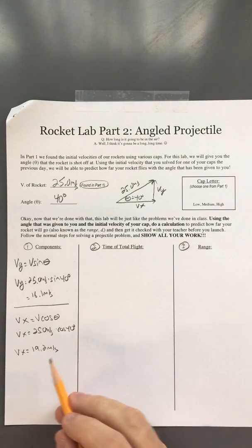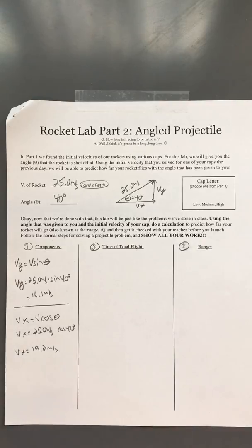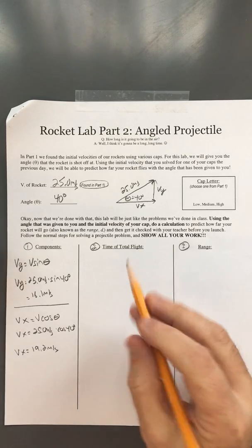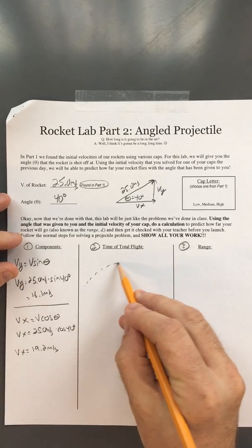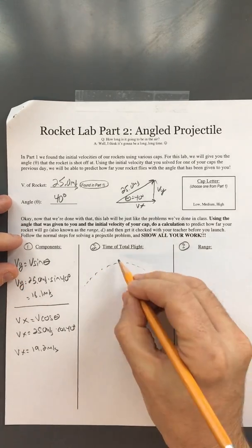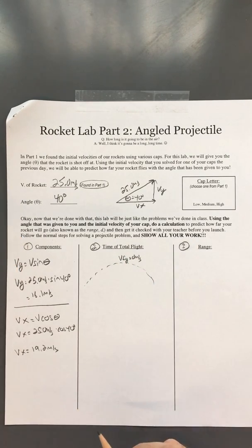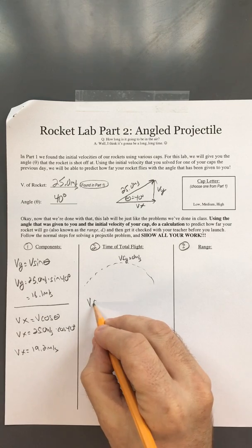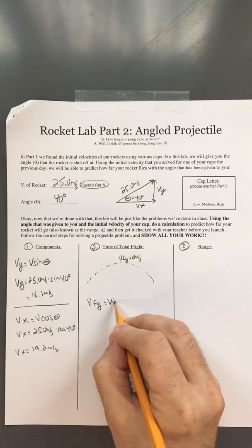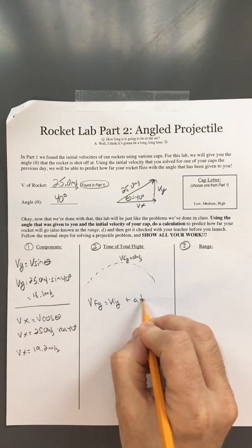Now that we have our components, we have everything we need for part two, which is finding the total time in the air. We know that when we reach the top, our y velocity is 0 meters per second, which allows us to use Vfy equals Viy plus At.